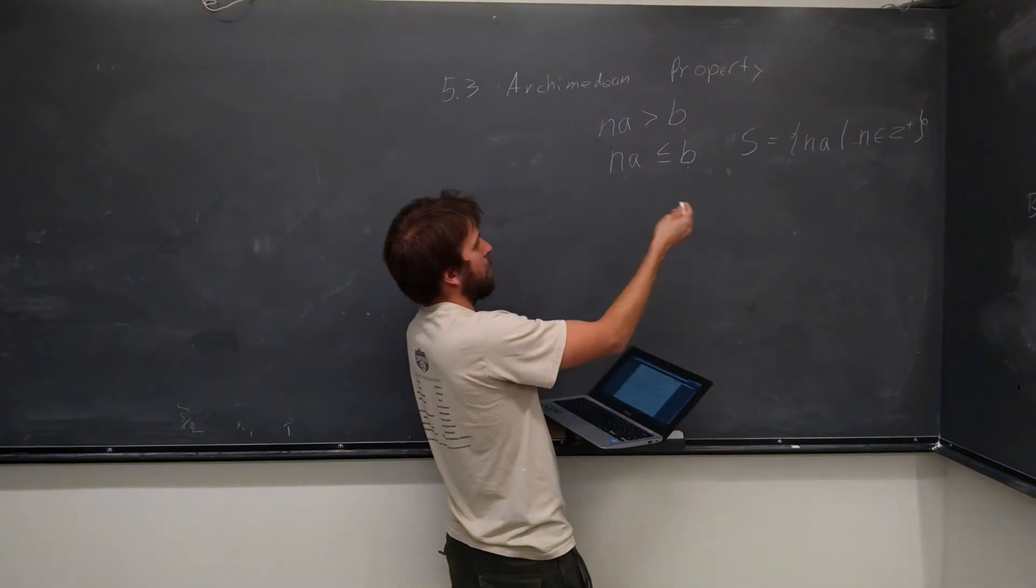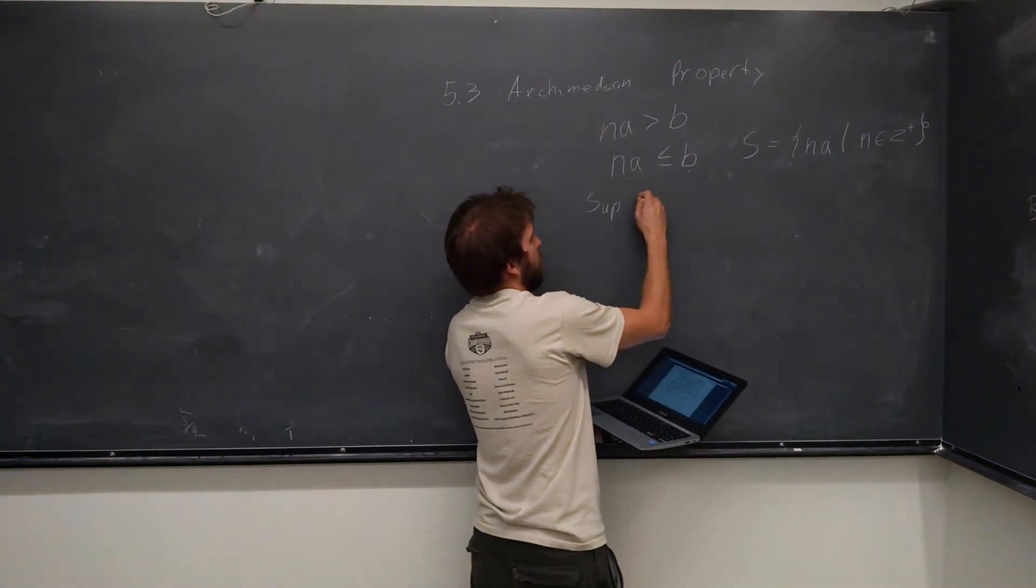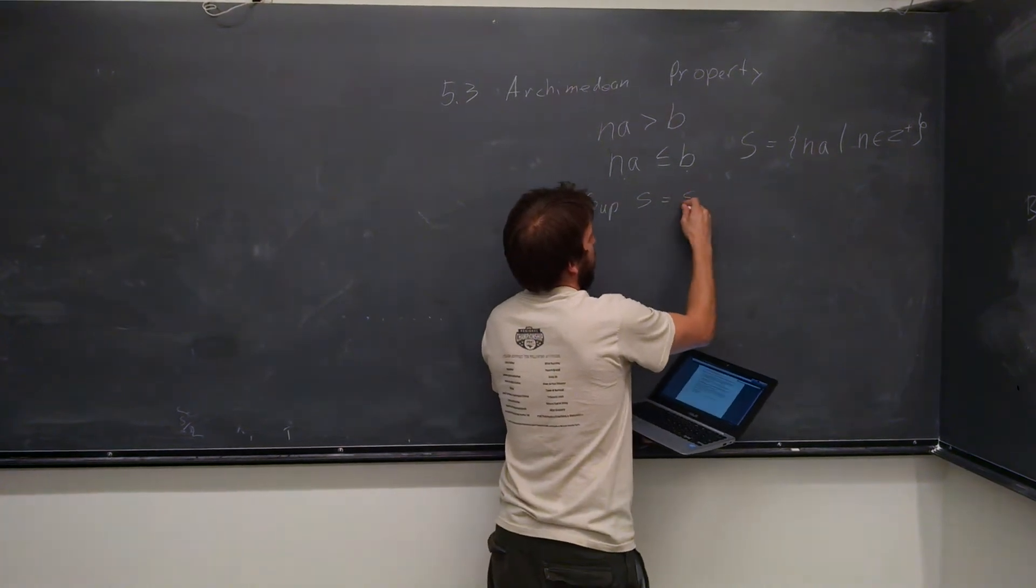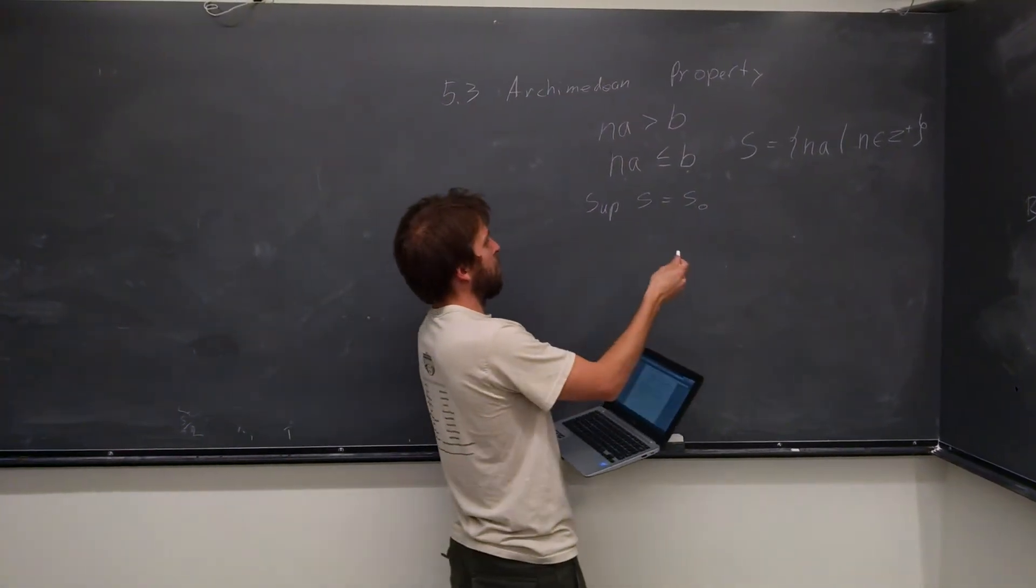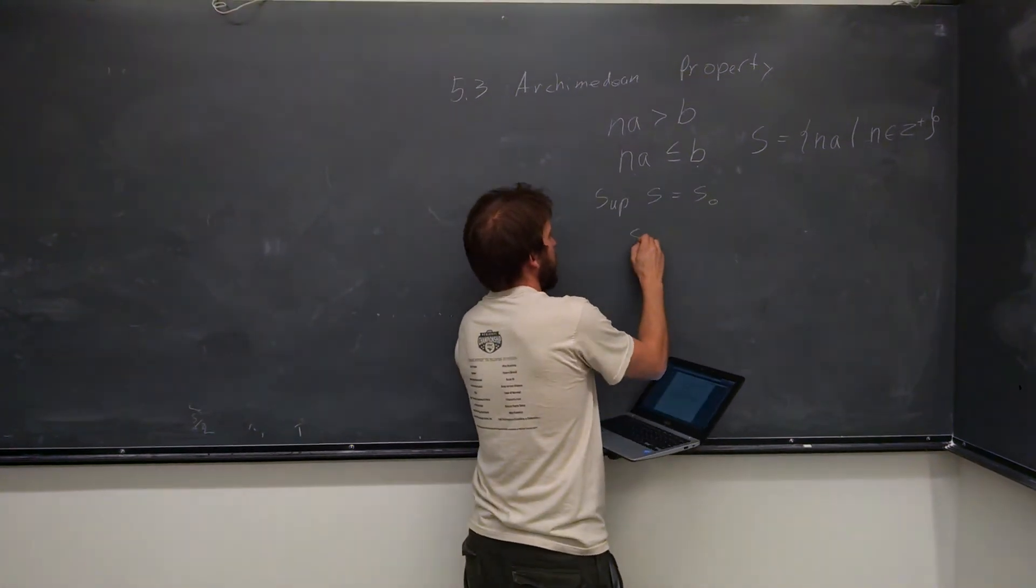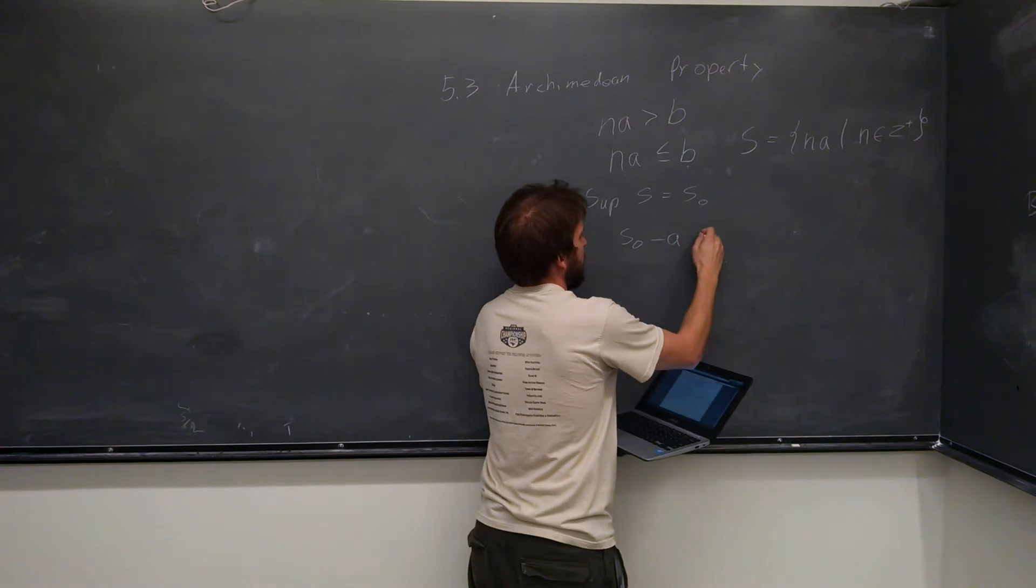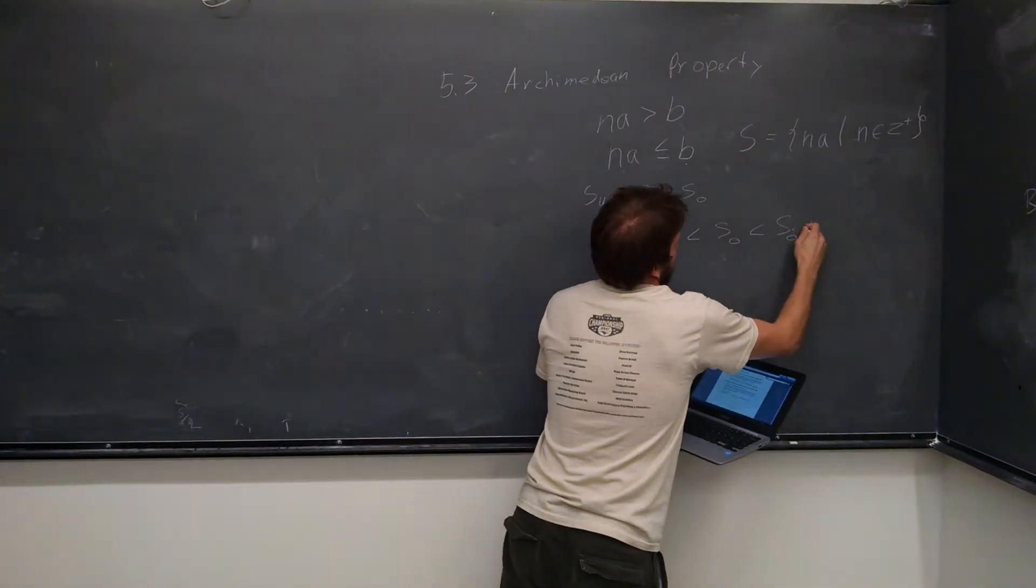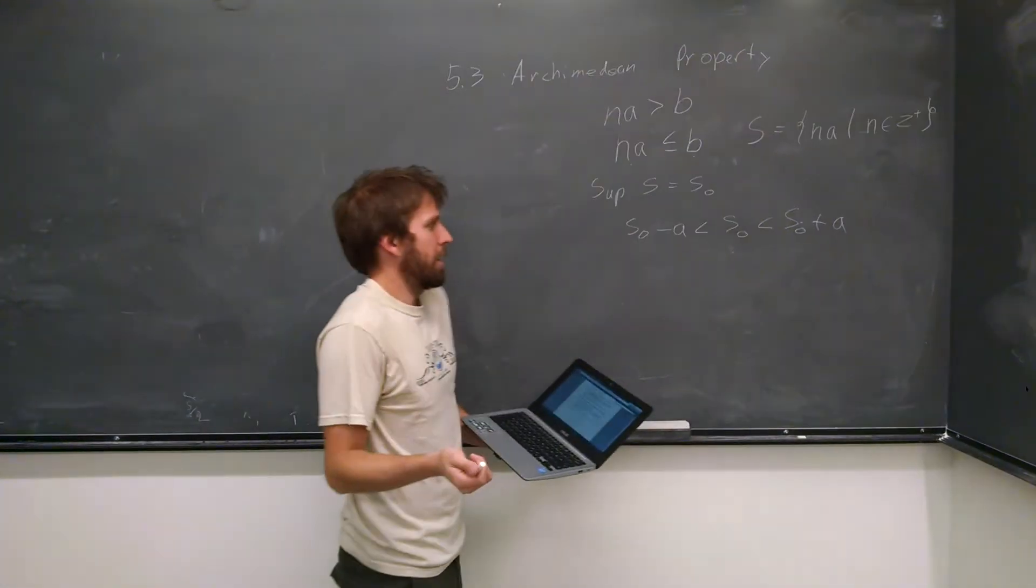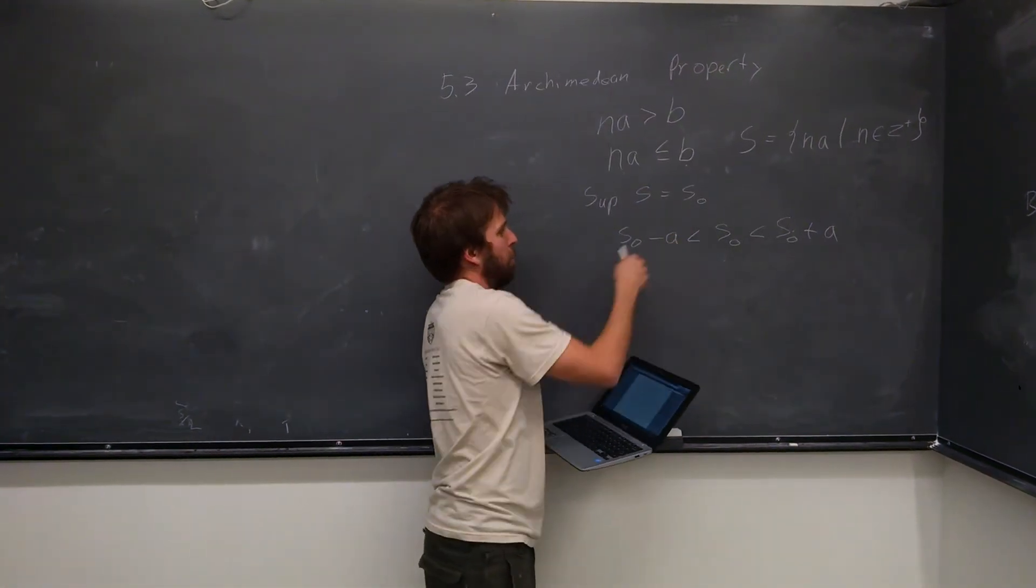By the completeness axiom, we know that S has a supremum. There's a sup S, and we call that S-naught. Some things we know about S-naught: S-naught minus A is less than S-naught, and it's also less than S-naught plus A. A is a positive number, so we know that this holds.